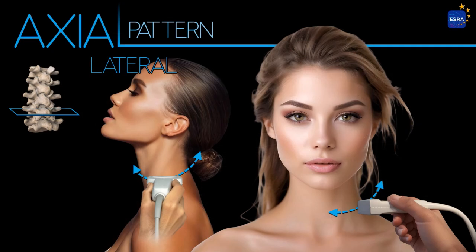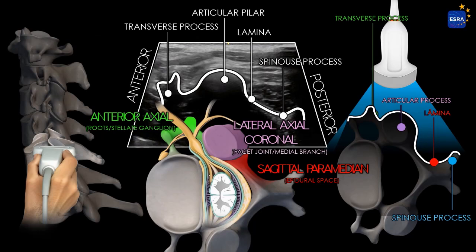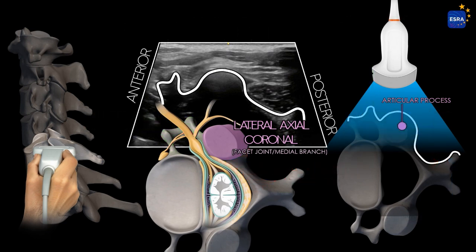The lateral axial scanning plane is useful for identifying the cervical facet zygapophysial joints, as well as the medial branch that innervates each corresponding level. Initiating the examination over the articular pillar will allow us to identify the cervical facet joint line or a section of the articular pillar, either the adjacent superior or inferior articular process. At this point, we will rotate the transducer to obtain a coronal scanning plane, a longitudinal lateral view of the articular pillars.